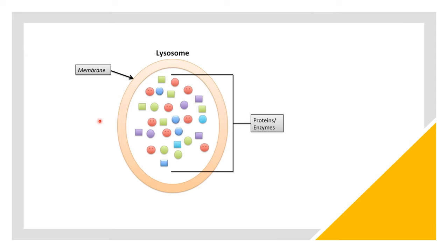Each individual lysosome, like any other cell organelle, is housed within a membrane. Inside the lysosome are a multitude of hydrolytic enzymes — there are almost 40 different types of hydrolytic enzymes that function to break down various waste materials into micronutrients.